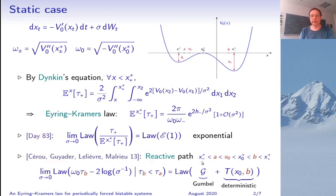One way of describing this is the following, which was developed by Cérou, Guyader, Lelièvre and Malrieu. What they do is they take points A and B close to the potential minima and start somewhere between A and the saddle. Then they look at the law of the first hitting time of B, conditioned on the fact that you hit B before A. And the result is that if you subtract a logarithmic term in sigma, you converge to the sum of a Gumbel random variable and a deterministic shift. This shows that the actual transition takes a time of order log σ⁻¹.